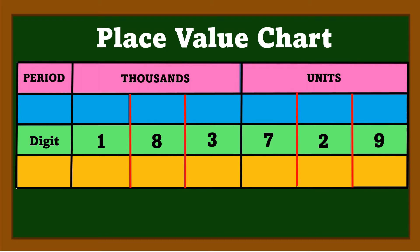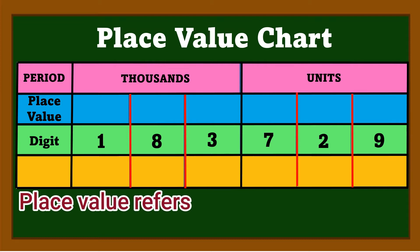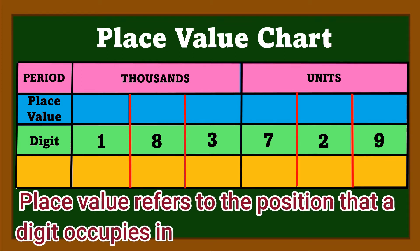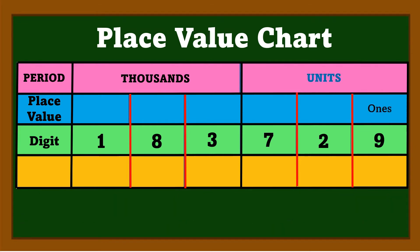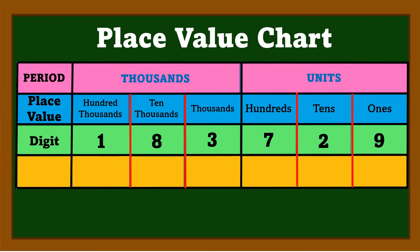The words 'units' and 'thousands,' among others, are used to name periods in our numeration system. It is easier for us to read large numbers when they are grouped by periods. Under the units family, we have ones, tens, and hundreds. For the thousands family, we have thousands, ten thousands, and hundred thousands.